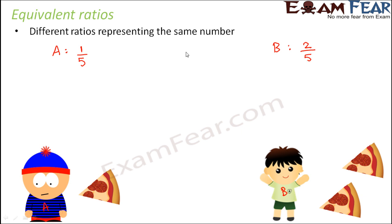What would be the ratio of the amount of pizza eaten by A to the amount eaten by B? The ratio would be 1/5 divided by 2/5, which would be 1 is to 2.